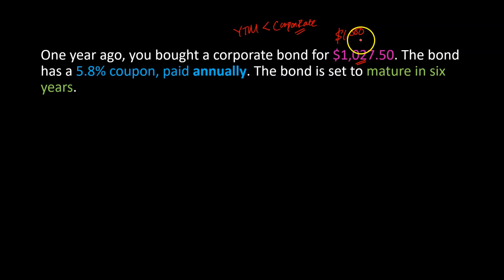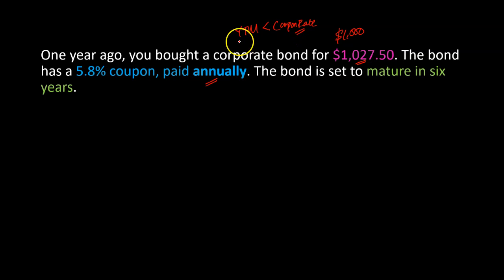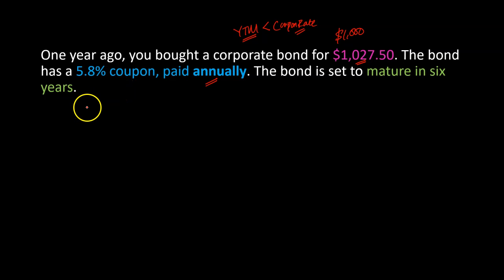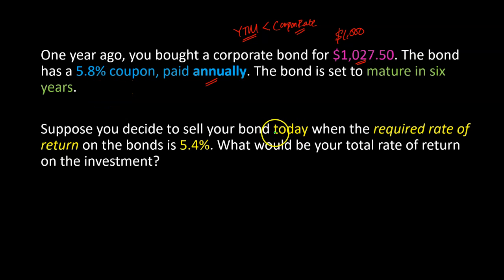The bond has a 5.8% coupon paid annually — unusual, but assumed in this question. A coupon of 5.8% confirms the yield to maturity at purchase was less than 5.8%. Today the bond has six years left to mature, which means one year ago when you bought it, it had exactly seven years until maturity.